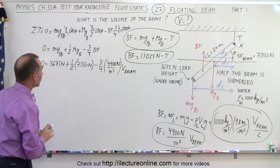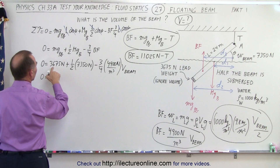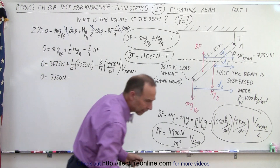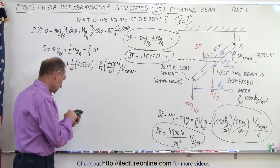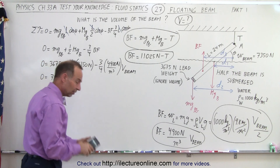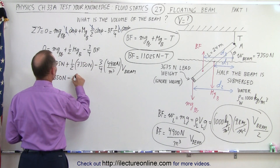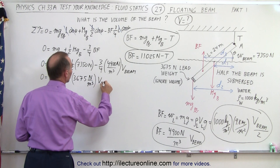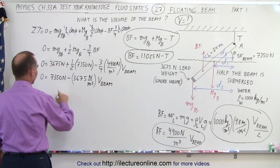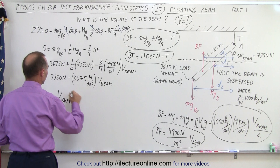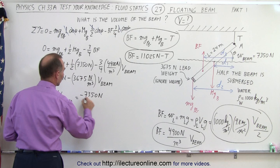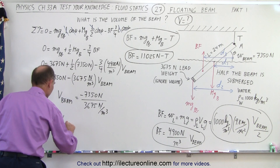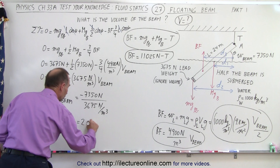Simplifying a little more: 0 equals 7350 Newtons minus 3675 Newtons per cubic meter times the volume of the beam. Finally, the volume of the beam equals 7350 divided by 3675 Newtons per cubic meter, which gives the volume of the beam equal to 2 cubic meters.